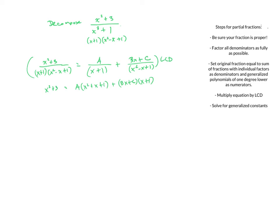The long way is to multiply out the right-hand side completely. The x squared terms are Ax squared and Bx squared, giving A plus B times x squared. The x terms are Ax, Bx, and Cx, giving A plus B plus C times x. The constant terms are A and C, giving A plus C.